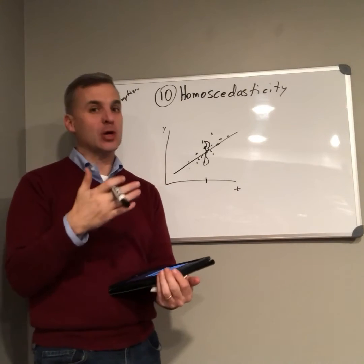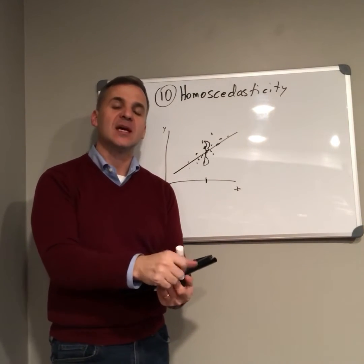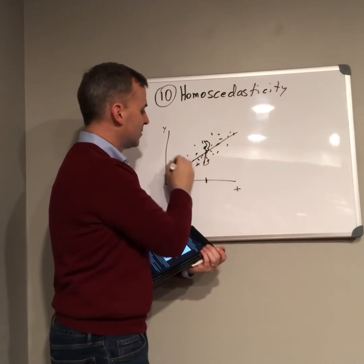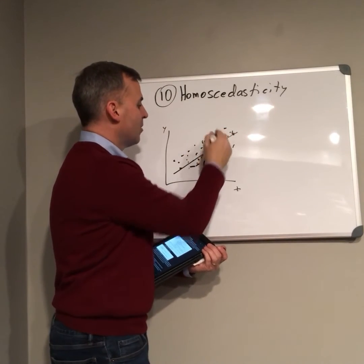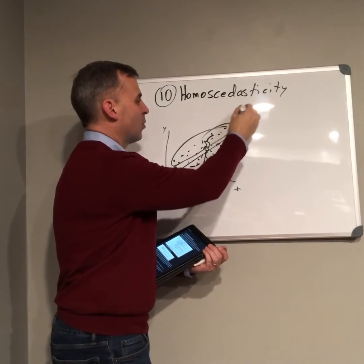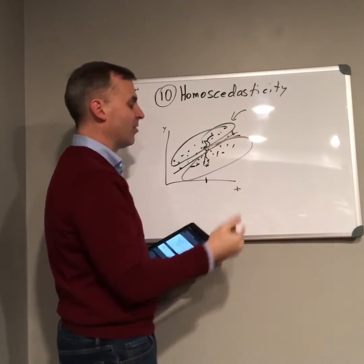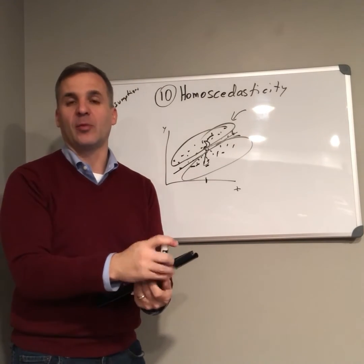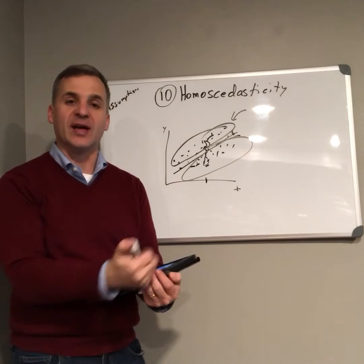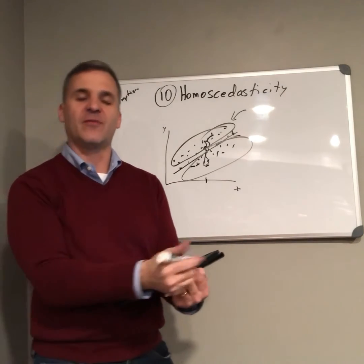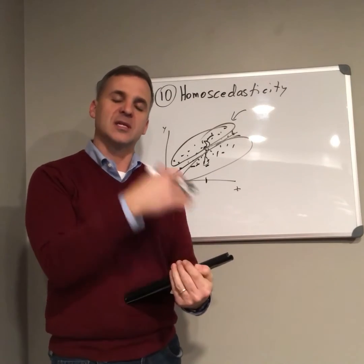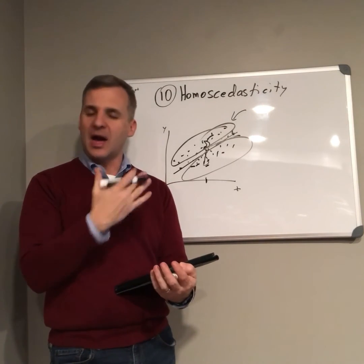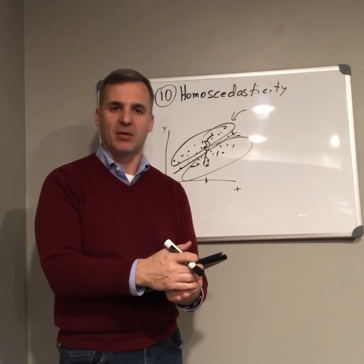When we have heteroscedasticity, that really means we have a moderator problem. We may see a scatter plot where what looks like spread is actually two different values of X — a case of missing a moderator variable. Heteroscedasticity means the variance of the residuals and the prediction errors is not constant for all values of X, and it's a sign that we're missing a moderator variable.